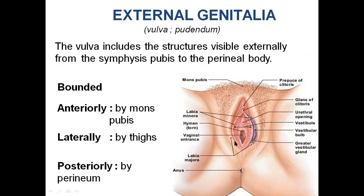Let us see the boundaries. Anteriorly, it is bounded by mons pubis. Laterally, it is bounded by the thighs, and posteriorly, it is bounded by the perineal body.